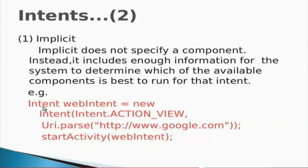Look at the code snippet. There is one Intent object created, and in the URI we are passing the address of Google. In the final line, we are starting an activity by passing a web intent as an argument — this means we will be redirected to the Google website. Some examples of implicit intents are launching a Google Map, opening an SMS application, or making a phone call.